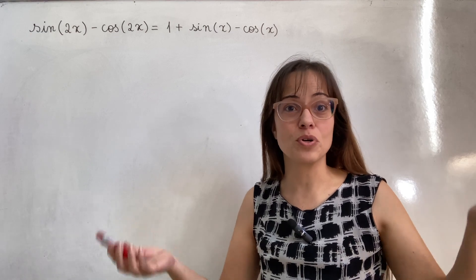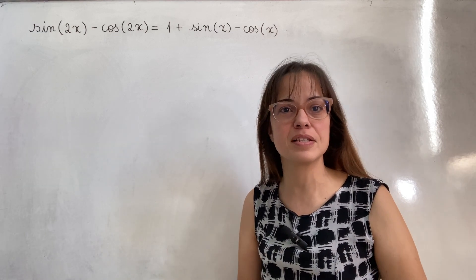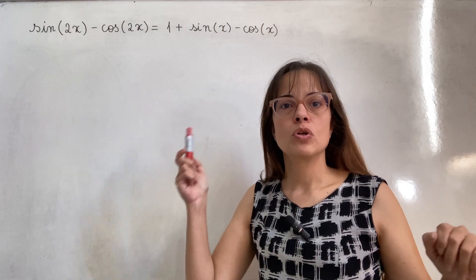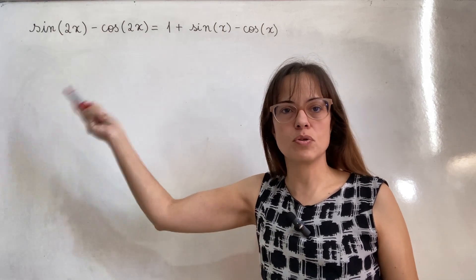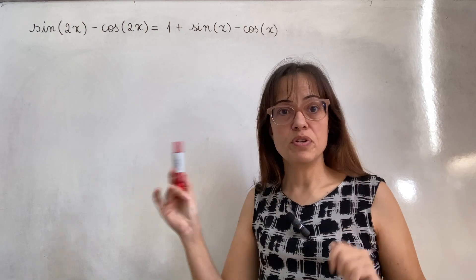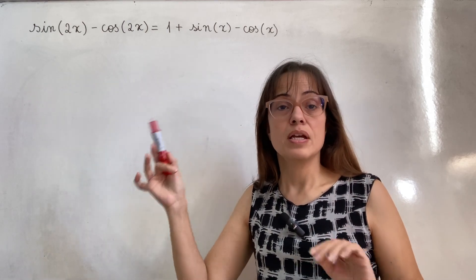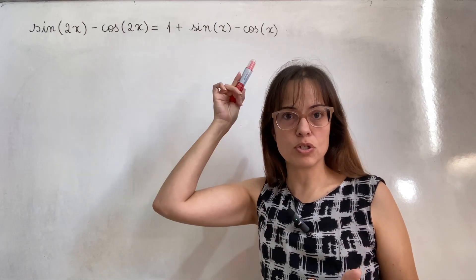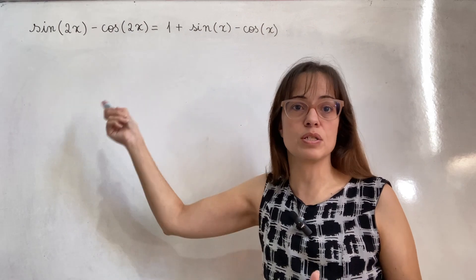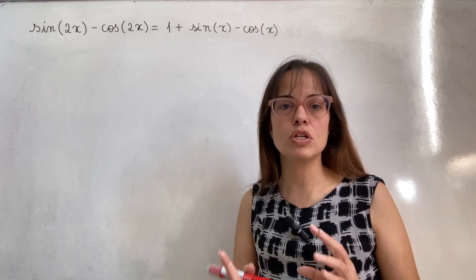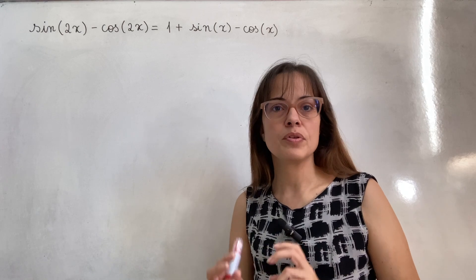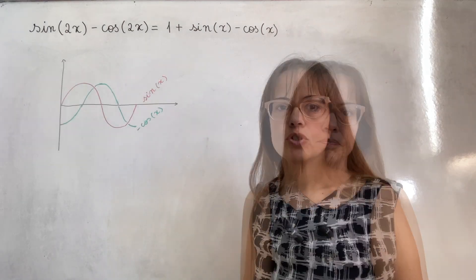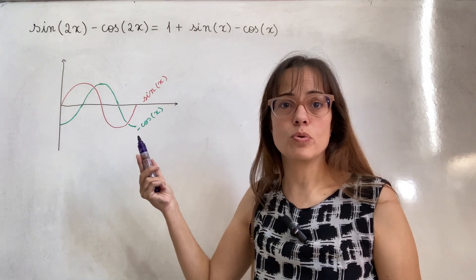That is the brute force approach — in a sense it always works if you're patient and don't make calculation mistakes. But I want to show you something more interesting. Notice how both sides of this equation use the same combination of sine and cosine: it's sine minus cosine of the same angle — sine x minus cosine x on one side and sine 2x minus cosine 2x on the other.